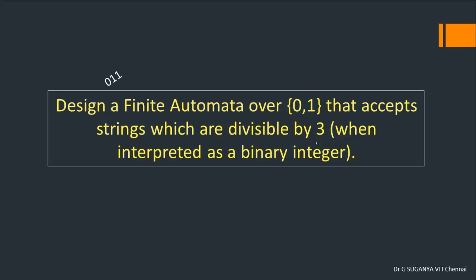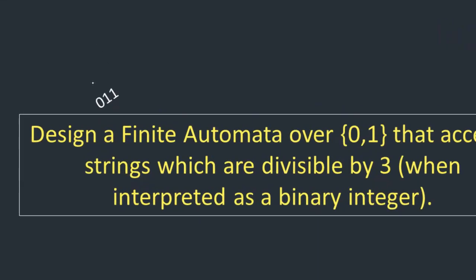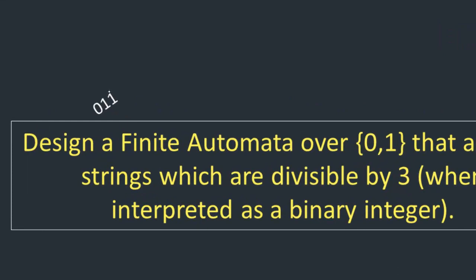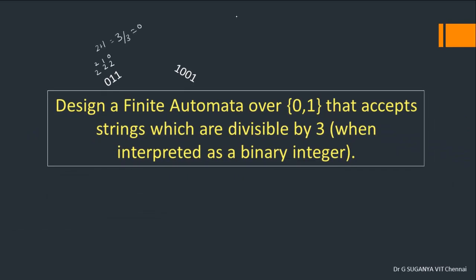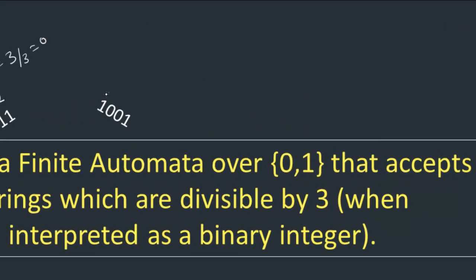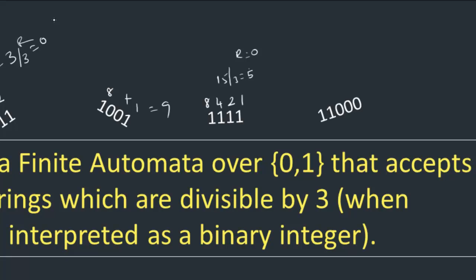Let us consider some binary strings and decide whether they are divisible by 3 or not. For 0,1,1 we start with the lowest bit: it has value 2^0, the next bit 2^1, the next 2^2. Wherever there is a 1, we substitute the value: that gives 1 plus 2 equals 3. So 3 divided by 3 leaves remainder 0, hence divisible by 3. Similarly, 1,0,0,1 gives 8 plus 1 equals 9, and 1,1,0,0,0 gives 16 plus 8 equals 24 — both divisible by 3.